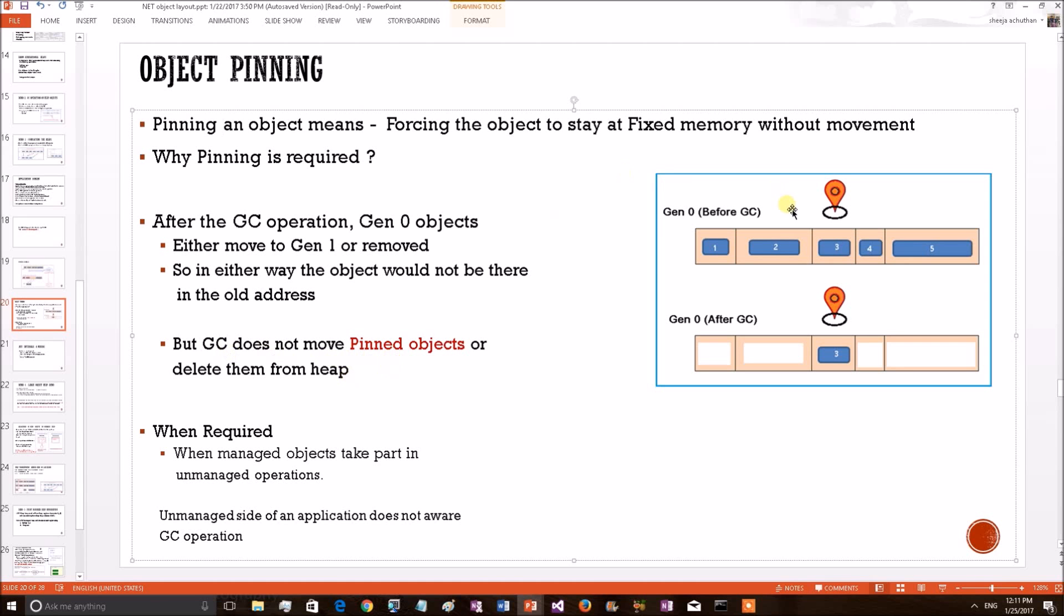This we can see from this pictorial representation. Consider this is Gen0 before GC condition and the programmer made the object tree as a pinned object. Then consider GC comes on this.